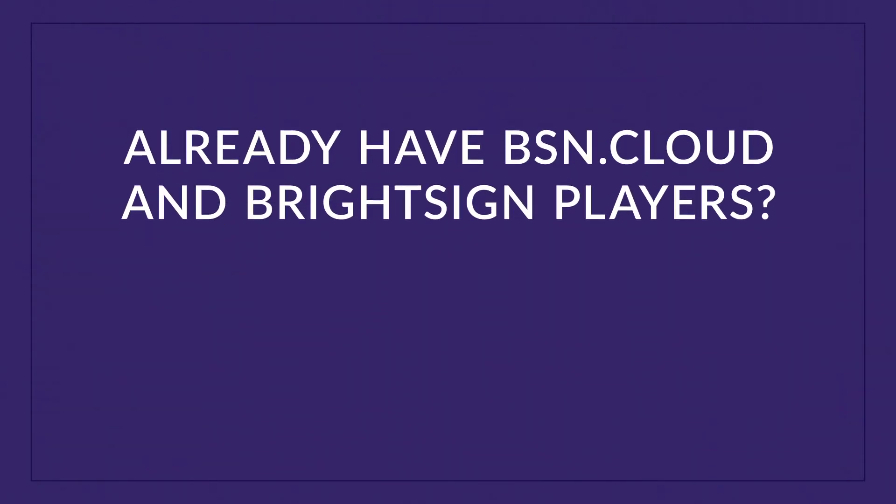That leads us into our third part. We're going to talk about what if you already have BrightSign players? What if I don't need to order them for you? What if you already have BSN Cloud? How do you get the Reach system on there? Let's jump into that next.